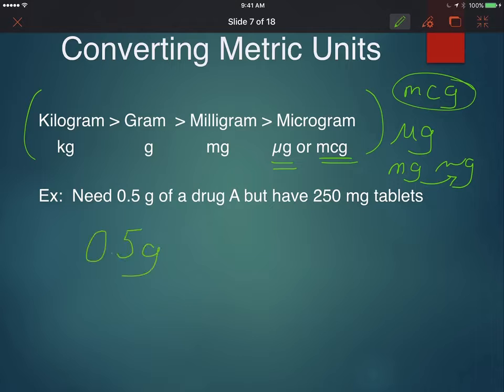Let's do this example. The question reads here, I need 0.5 grams of drug A, but I have 250 milligram tablets. I can see here I have milligrams on one side and grams on the other side. How am I going to do any kind of dose calculation? I'm going to have to use the same units. Remember when you're doing dose calculations, you need your units to be the same.